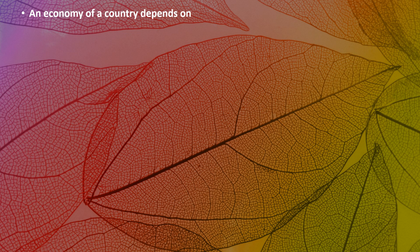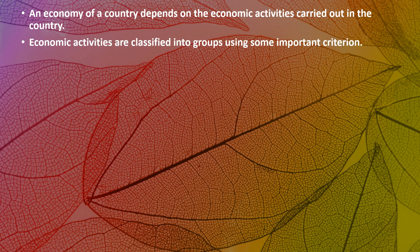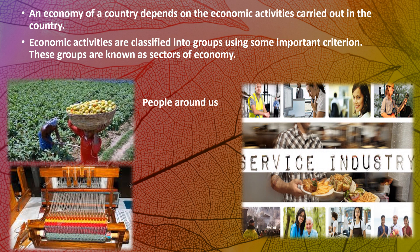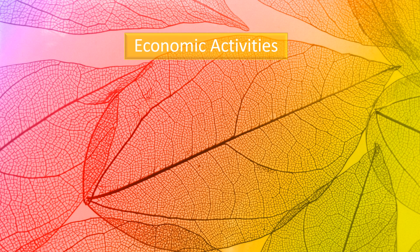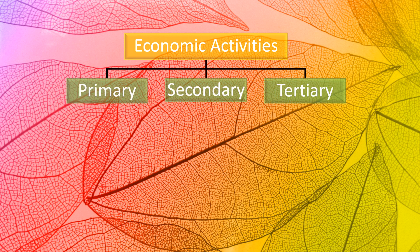An economy of a country depends upon the economic activities carried out in the country. Economic activities are classified into groups using some important criteria — these groups are known as sectors of economy. People around us are engaged in different activities to earn a livelihood; some may be producing goods while others may be delivering services. An economy depends upon primary, secondary, and tertiary occupations carried out in a country.